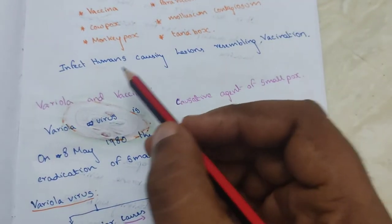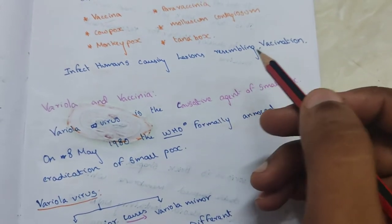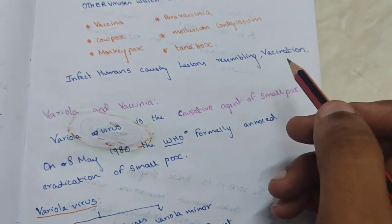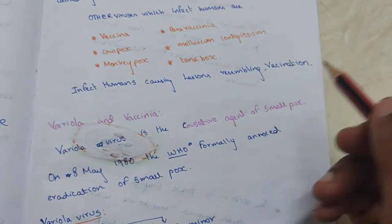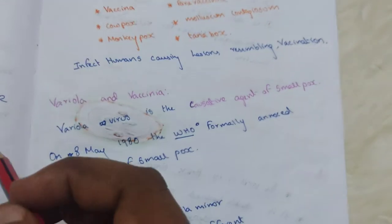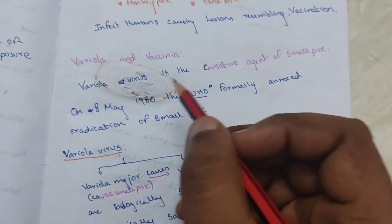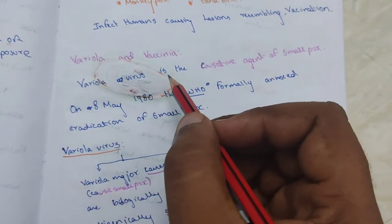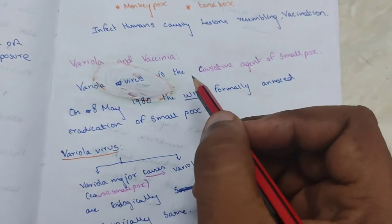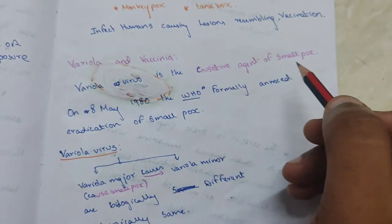These viruses infect humans causing lesions resembling vaccination. Variola virus is the causative agent of smallpox.